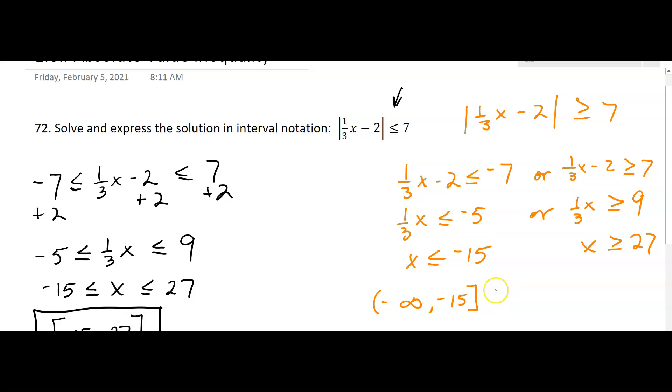So square bracket 27 to—oops, that's supposed to be 27—27 to infinity.